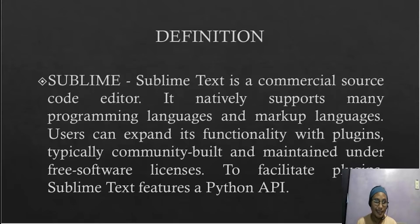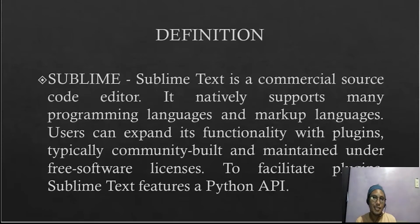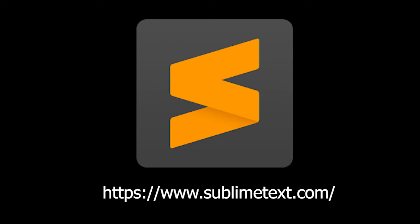Basically, Sublime Text is a text editor used by programmers for coding in programming languages and markup languages. Examples of programming languages include C++, Java, and PHP. For markup language, it is a system used in HTML. This is the logo of Sublime — you can download Sublime using the provided link.